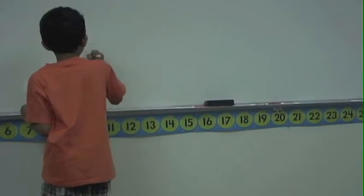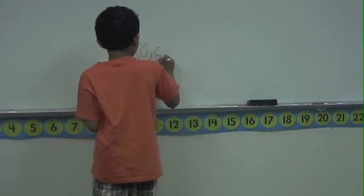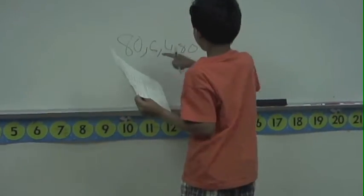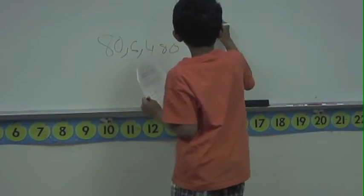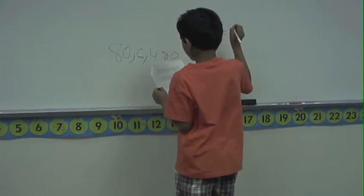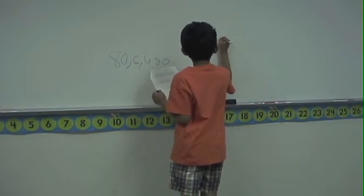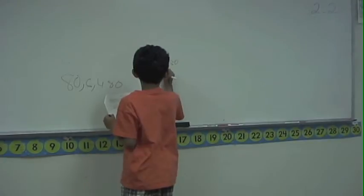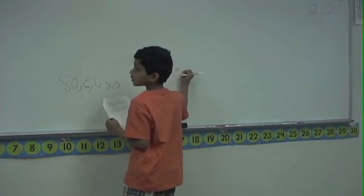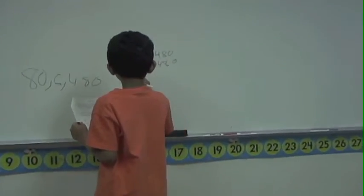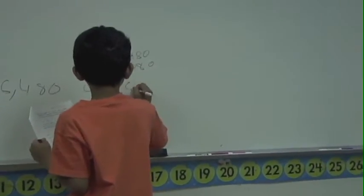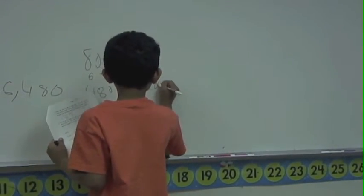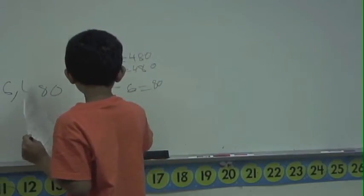The numbers eighty, six, and four hundred eighty have to go together. You can figure out: eighty times six equals four eighty, and six times eighty equals four eighty, and four eighty divided by six equals eighty, and like that.